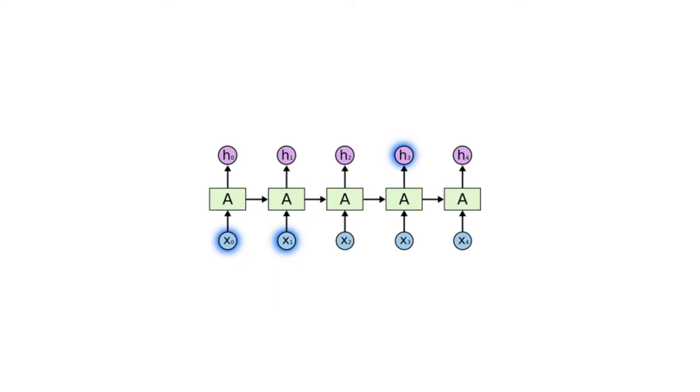Sometimes we only need to look at recent information to perform the present task. For example, consider a language model trying to predict the next word based on the previous ones. If you are trying to predict the last word in the sentence 'the clouds are in the sky,' we don't need any further context. It's pretty obvious that the next word is going to be sky. In such cases, where the gap between the relevant information and the place it's needed is small, RNNs can learn to use the past information.